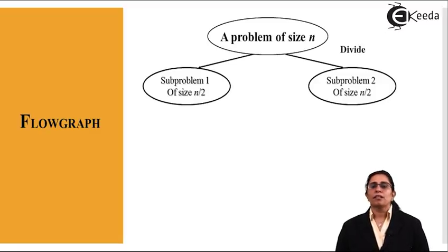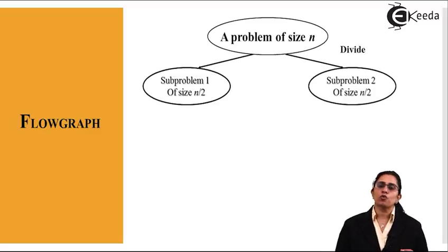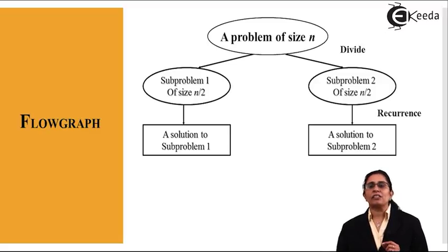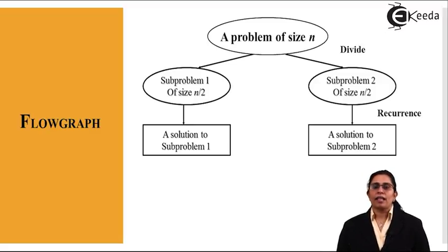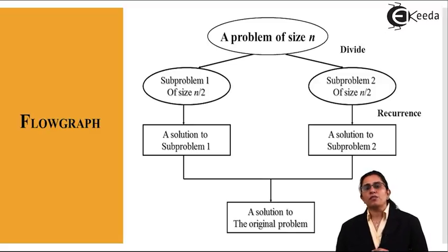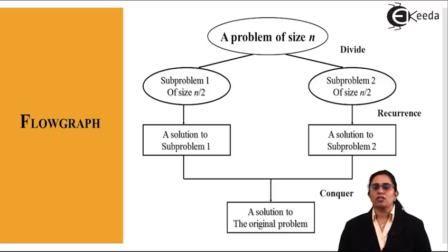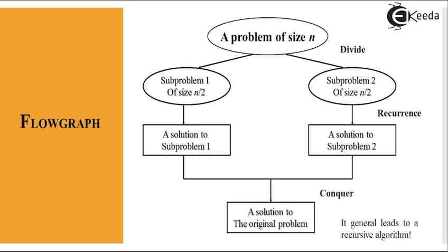After dividing the problem of size n into two sub-problems of size n/2 each, I find a solution to each sub-problem. Finding the solution for each sub-problem is known as the recurrence strategy, where recursion is used to solve them. When both sub-problems have a definite solution, the solution to the original problem is found — and that is known as conquer. This is the simple flow graph for divide and conquer strategy.